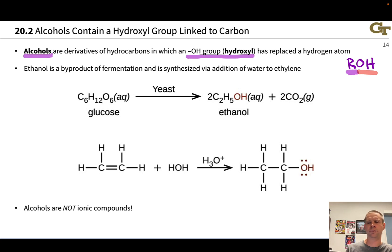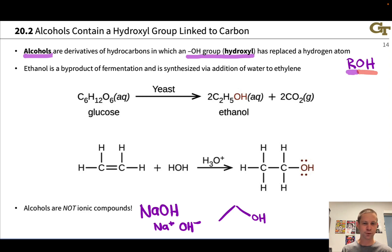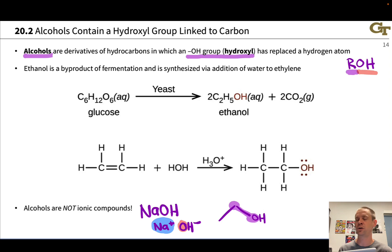An important point about alcohols is that they are not ionic compounds. There's a very big difference between sodium hydroxide, NaOH — which we know to be Na+ and OH− — and something like ethanol. In NaOH, the bond between Na and O is essentially ionic; O is negatively charged and Na+ is positively charged. In ethanol, the carbon-oxygen bond is essentially covalent — a polar covalent bond polarized towards oxygen, but still a covalent bond.